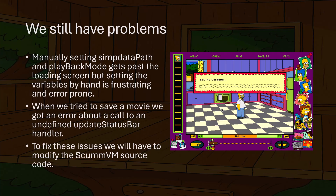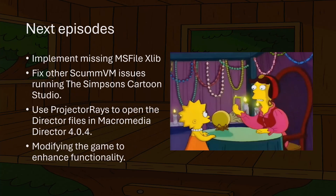In future videos, we are going to look at implementing the missing ms file xlib and work on fixing other ScummVM issues such as the update status bar handler. I've actually already done this work and have submitted a pull request to the ScummVM GitHub repository, which will be linked in the video description. We'll also look at using a program called ProjectorRays to open the Simpsons Cartoon Studio Director files in Macromedia Director 4. Additionally, I would like to look into how to modify the game to enhance its functionality — one idea is to increase the number of possible characters you can have when making a cartoon.